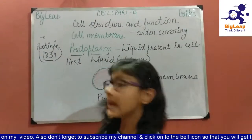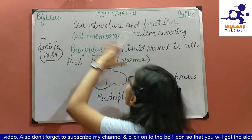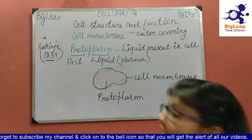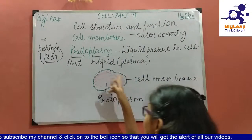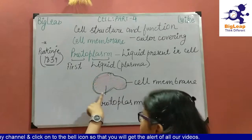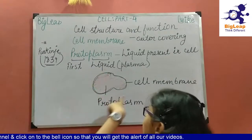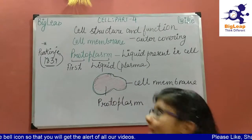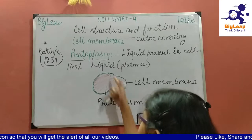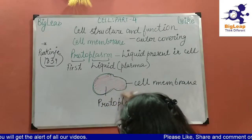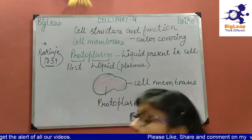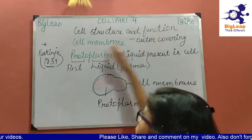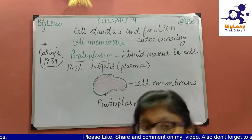The cell membrane is the outer covering of the cell. If this is a cell, the green line here represents the cell membrane — it is the boundary or outer covering of the cell.